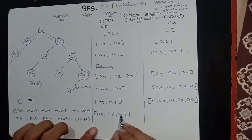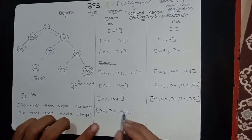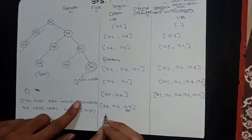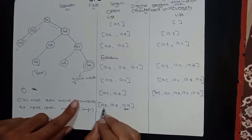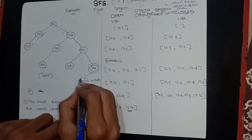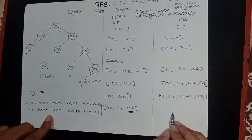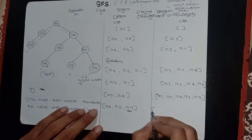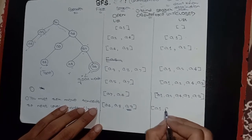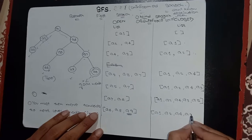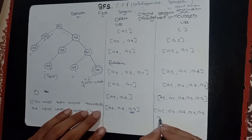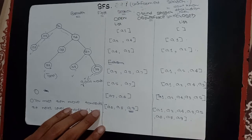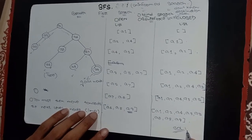I have finally reached my destination path, the goal node. I will not further explore the nodes and will put them into the close list. A6, A8, and A9 don't have any further child nodes, so I put them into the close list. The final close list is: A1, A2, A4, A3, A5, A6, A8, A9.